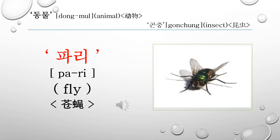The first word is 파리. 파리 is called a fly in English. Let's read it again: 파리, 파리.